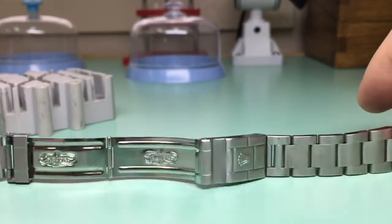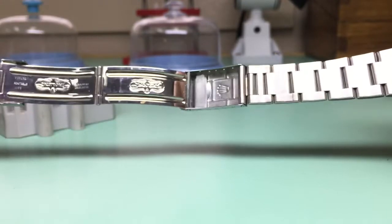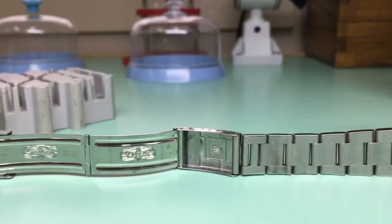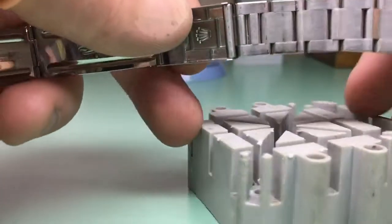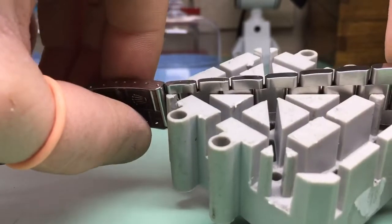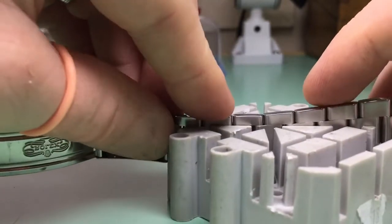So first things first, what are the issues we could come into when trying to remove a screw from a watch bracelet? Well, the first issue is chewed up screws. This is something I see a lot in my workshop—a lot of chewed up bracelet screws and movement screws.